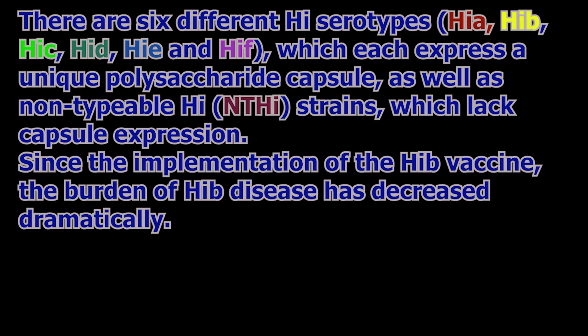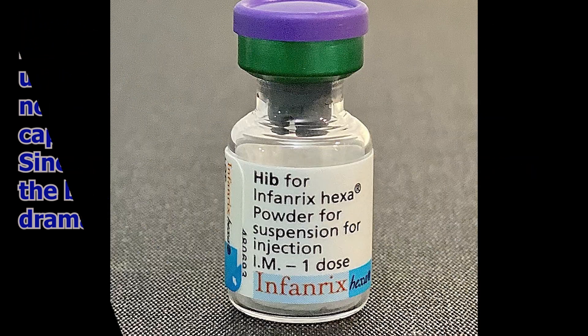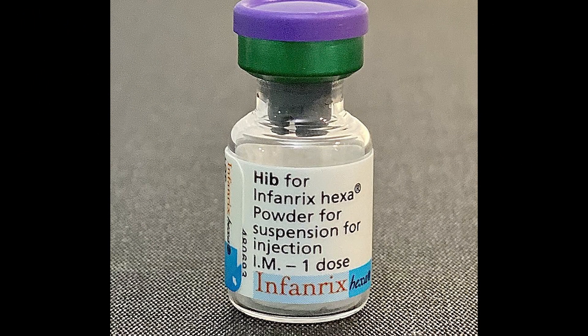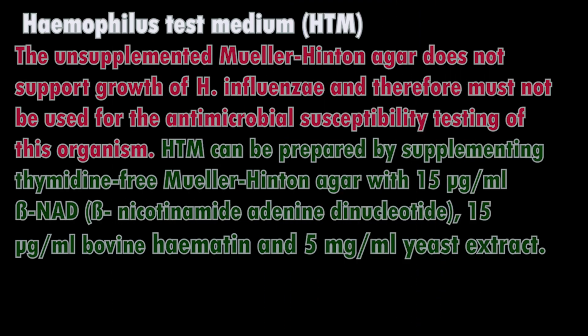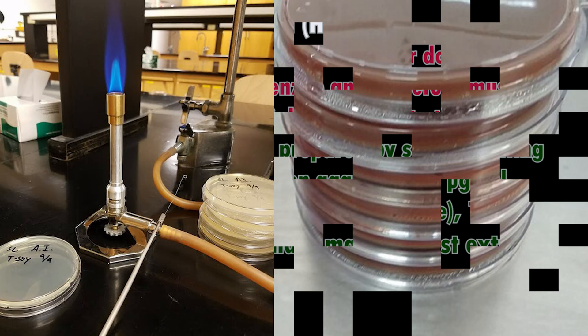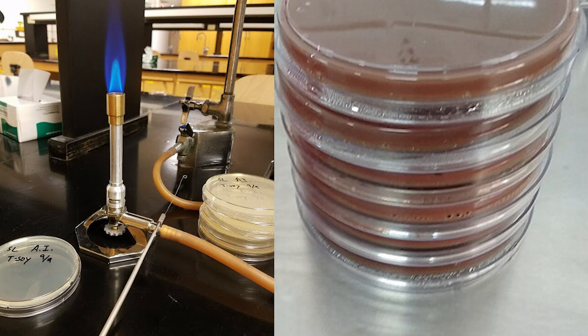Identification of H. influenzae serotype: H. influenzae is recognized to have six serotypes — A, B, C, D, E, and F. H. influenzae type B is the major cause of both H. influenzae meningitis and pneumonia. Antibiotic sensitivity testing: the recommended medium for antimicrobial susceptibility testing is Haemophilus test medium, containing X and V factors, or chocolate agar can be used.